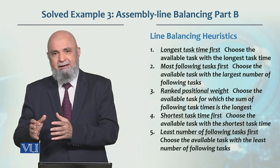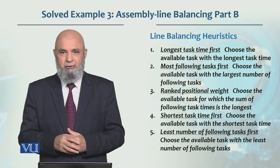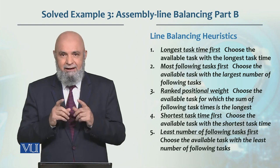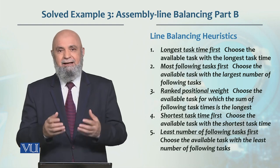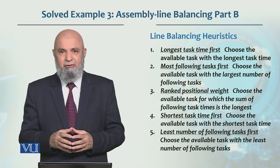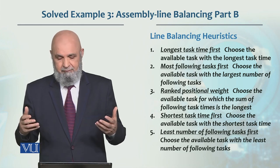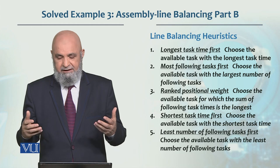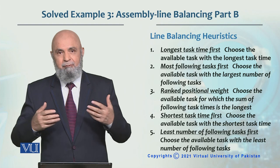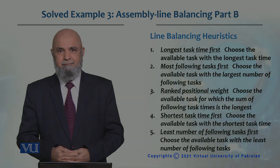Shortest task time first, first heuristic کا exactly opposite ہے، اور least number of following tasks first، second heuristic کا exactly opposite ہے۔ ایک خیال رکھنا ہے کہ پوری assembly line میں ایک ہی rule use کرنا ہے — ہر station کے لیے الگ rule نہیں۔ اگر دو یا تین tasks میں tie پڑ جائے تو پھر دوسرا rule use کریں۔ مثلاً primary rule longest task time first ہو، اور tie break کے لیے most following tasks first۔